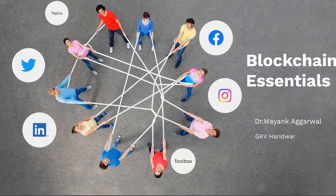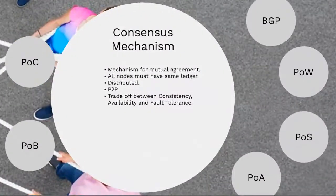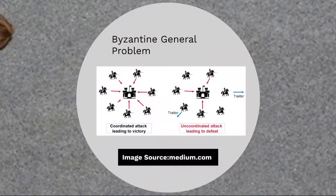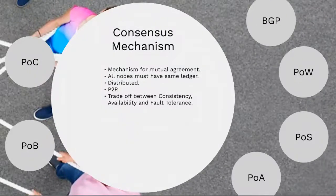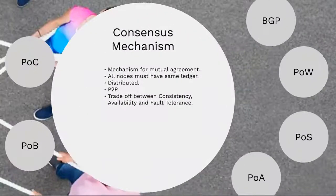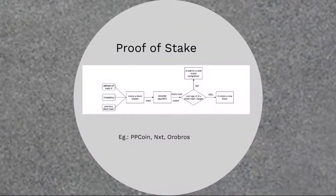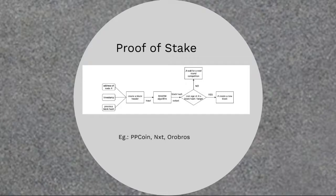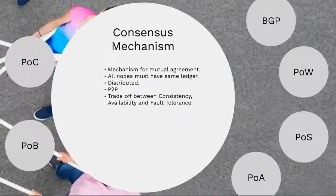Before we proceed, let us quickly revise proof of work and proof of stake. Proof of work was an energy-intensive algorithm which required a huge amount of energy consumption and computation, because the nonce had to be computed by the miners. This problem was solved in proof of stake, where miners were allowed to join a block into the chain depending upon the time spent, the coinage, and the stake of coins they have in that particular blockchain.